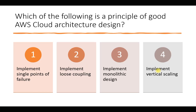The next question asks: which of the following is a principle of good AWS cloud architecture design? This question is relevant even for the Solutions Architect exam. The options are: implement single point of failure; implement loose coupling; monolithic design; and implement vertical scaling. Single point of failure is not correct — we always try to avoid it. Loose coupling is related to microservices and app modernization, where the application is divided into separate components that are loosely attached to each other.